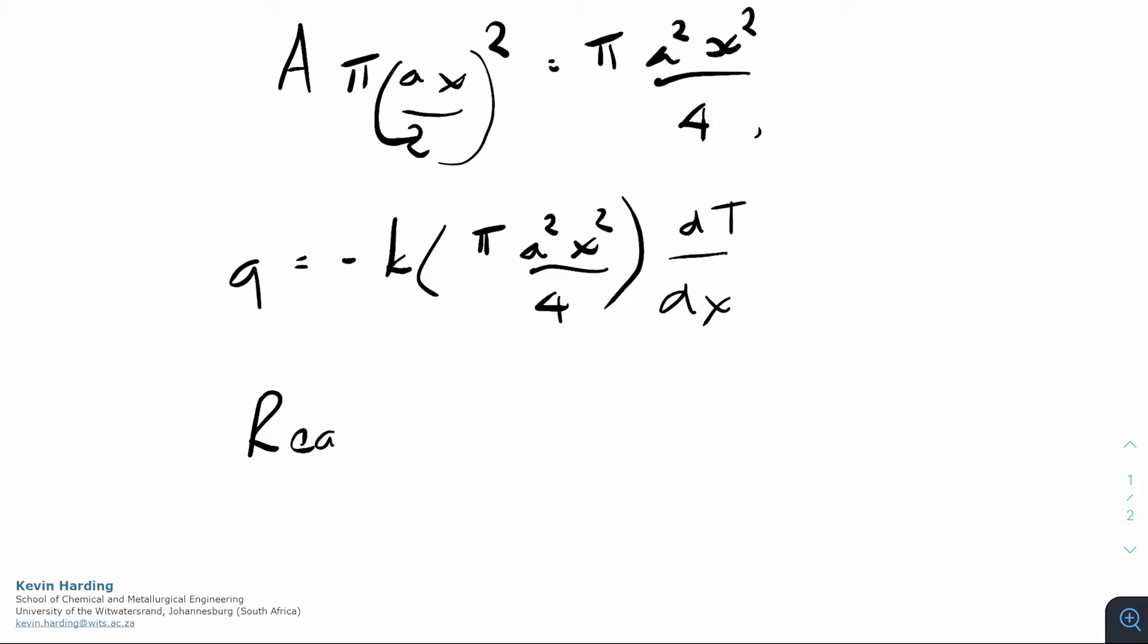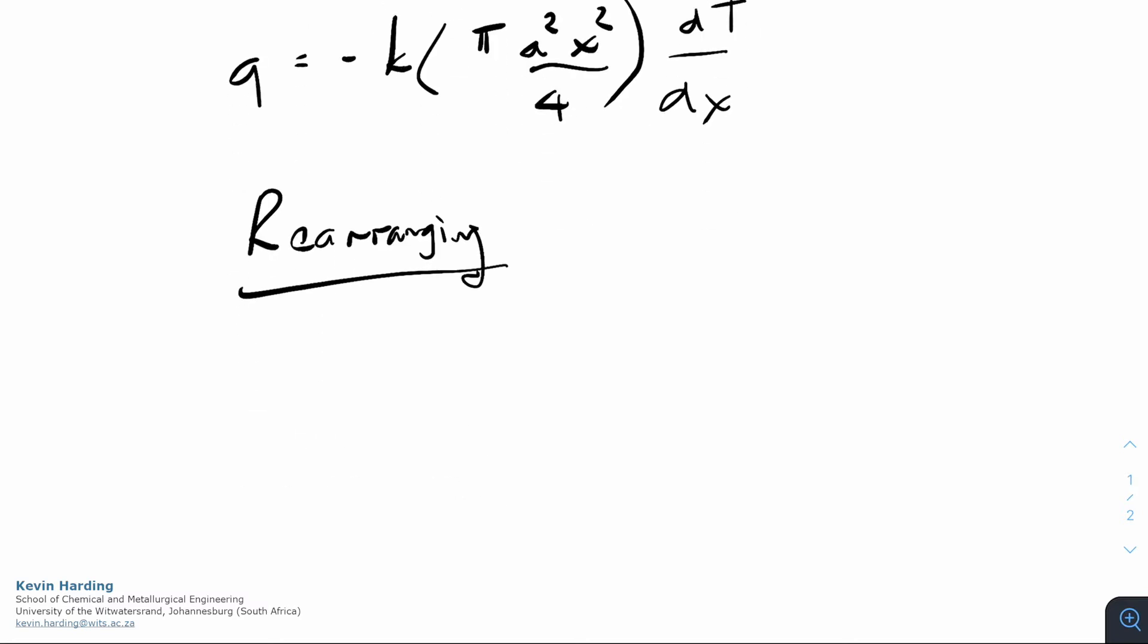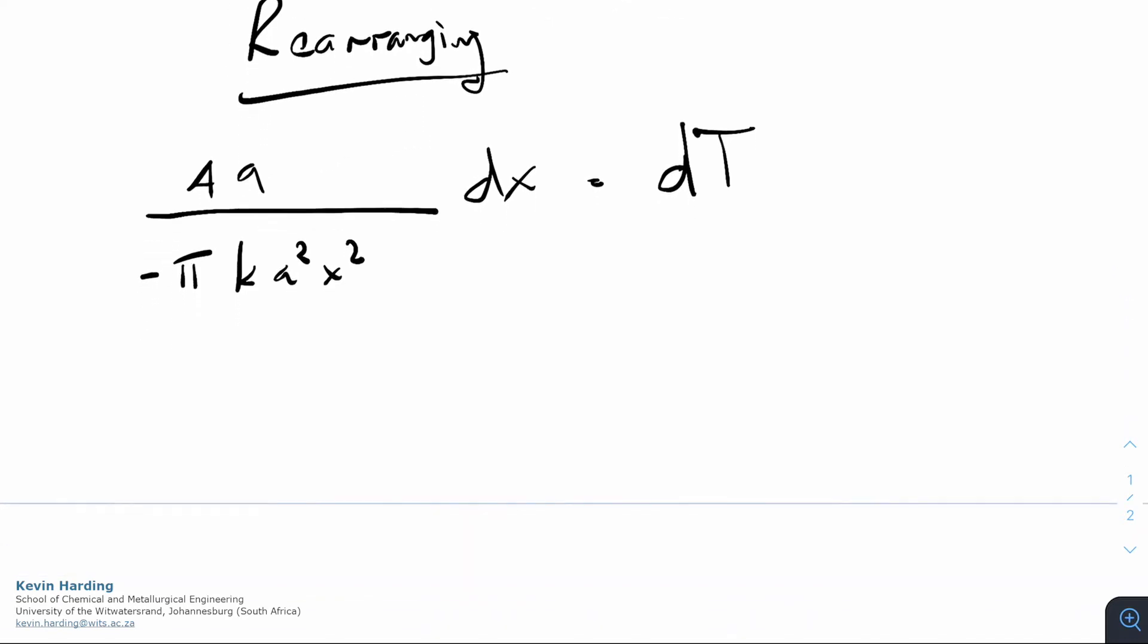Rearranging, we will leave the dt on the right-hand side as a separable equation. We will take the dx on the left. For this one, I'll simply put everything else on the left-hand side, so it's 4q divided by minus pi k a squared x squared. That is it. So what we want to do is integrate with respect to x and t, however we've got an x squared here so we need to keep that inside the integral.